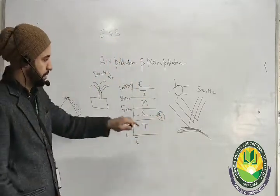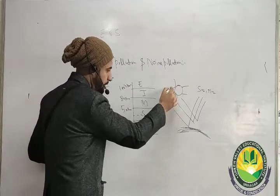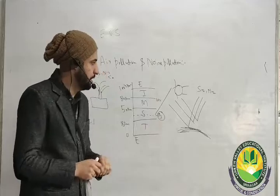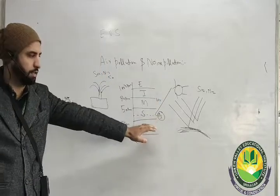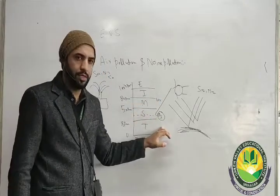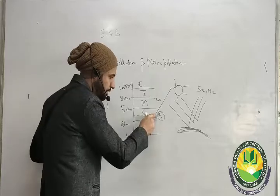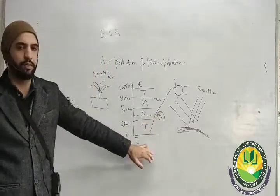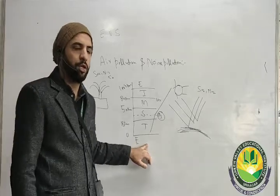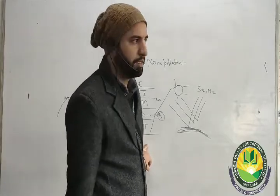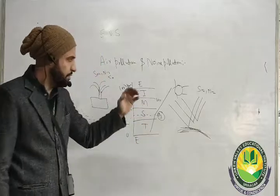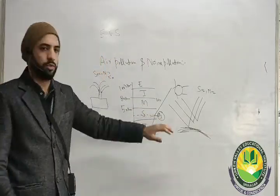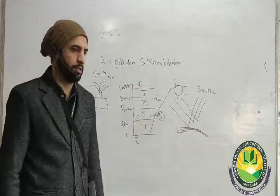Ozone protects the Earth from the sun's ultraviolet radiation. If ozone were not present, ultraviolet radiation would reach Earth directly, causing skin cancers, immune disorders, and genetic disorders. So the ozone layer is critical for saving us from UV radiation.